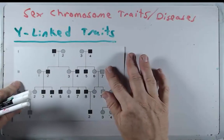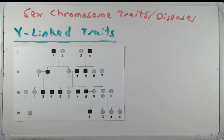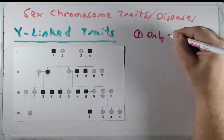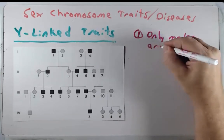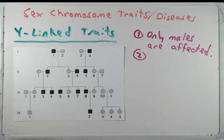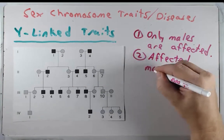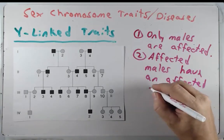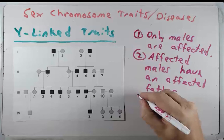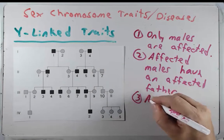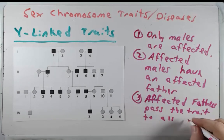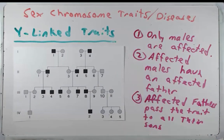Now I want to show you a pedigree of a Y-linked trait — this particular one is the pigment disease. Some features: first, only males are affected, and we can see that here — only the square symbols, which represent males, are shaded in. Second, affected males have an affected father. Anytime you have an affected son, their father will also be affected. Third, affected fathers pass the trait to all their sons, because all their sons will get a Y chromosome.